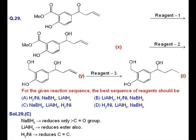In the second step, reagent 2, we can use lithium aluminum hydride which will reduce the ester group. Lastly, we can use H2/Ni which will reduce the C double bond C group. So only this order can be used, which is available in option C.